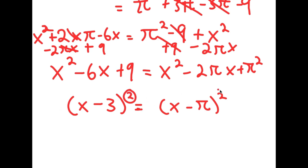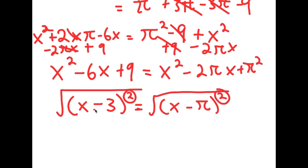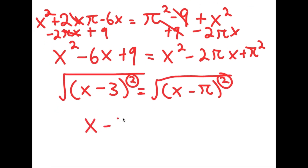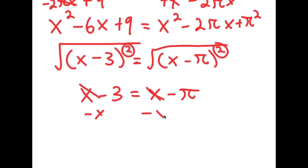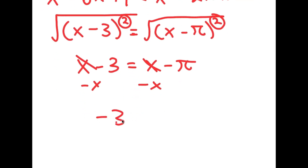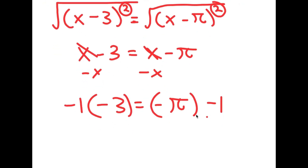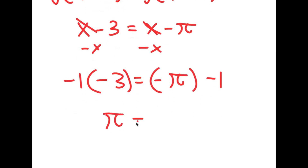So I have x minus 3 squared equals x minus pi squared. I want to cancel these two squares, so I take the square root on both sides. The square root of x minus 3 squared is x minus 3, and the square root of x minus pi squared is x minus pi. So I get x minus 3 equals x minus pi. Subtracting x from both sides gives negative 3 equals negative pi. Multiplying both sides by negative 1, I get pi equals 3. So there you have it — I just proved that pi equals 3.